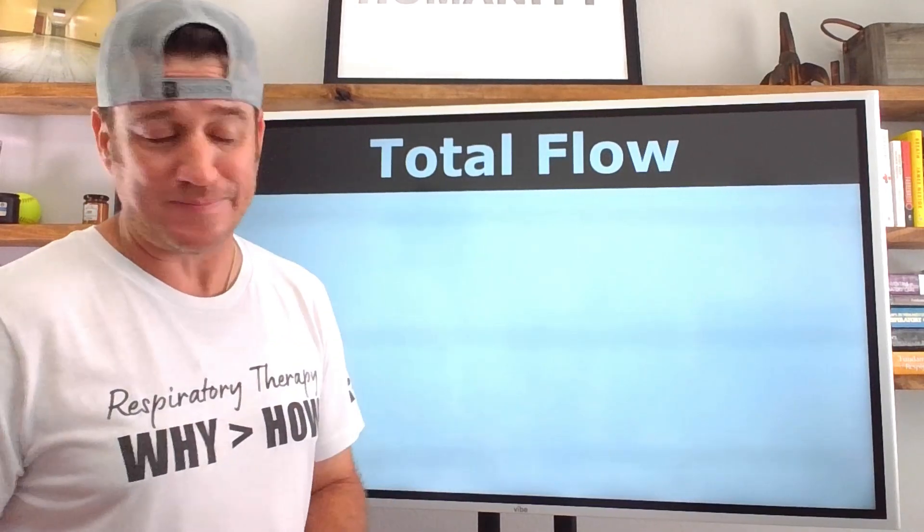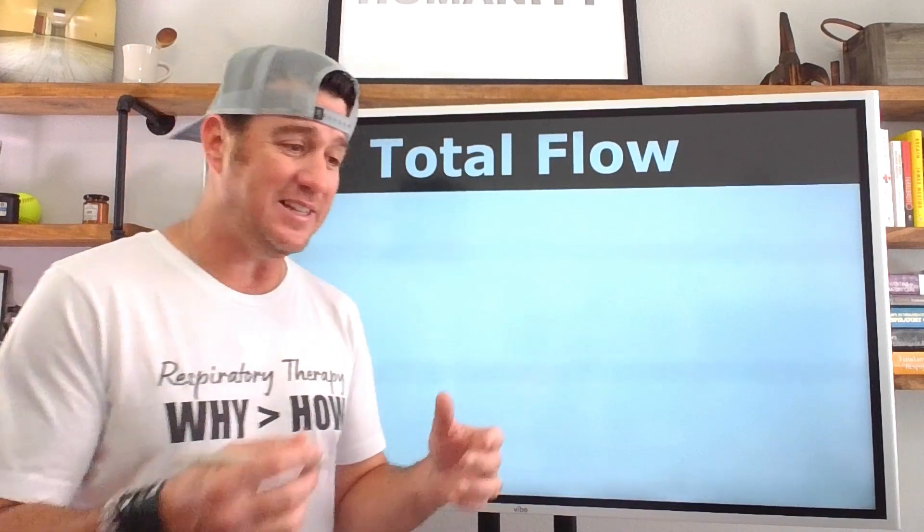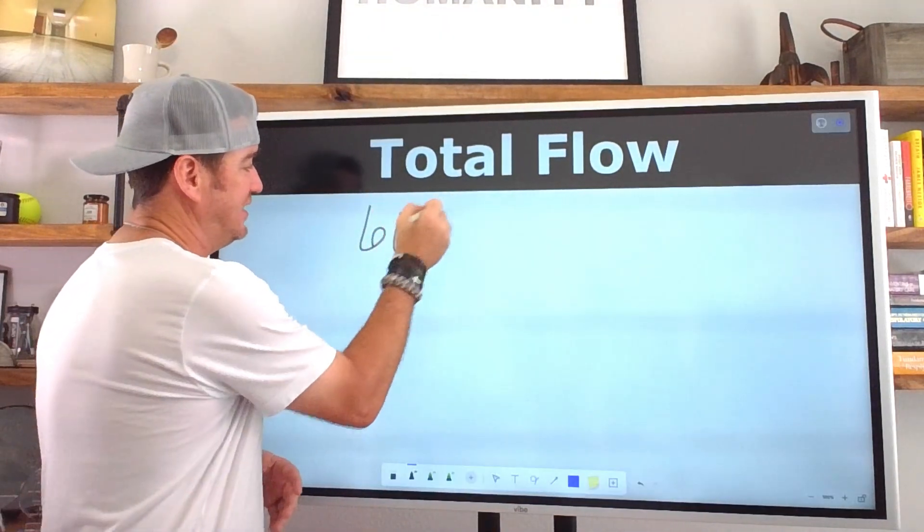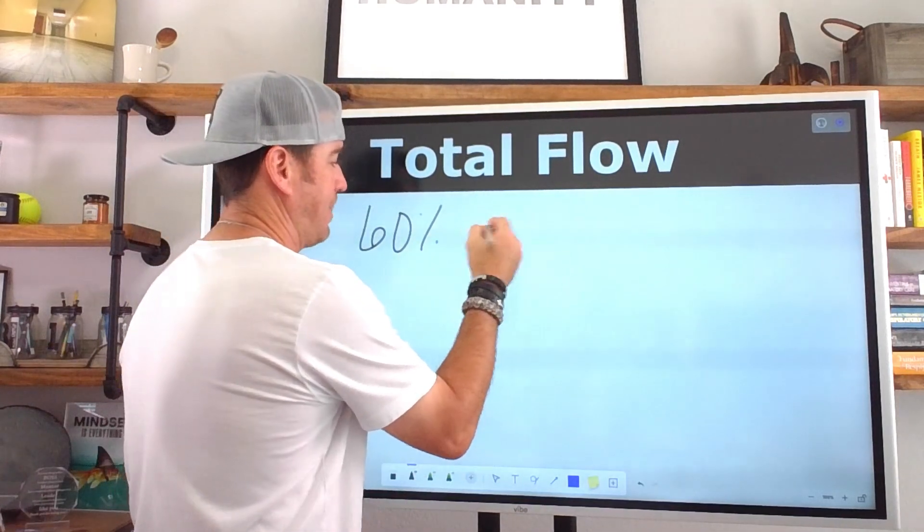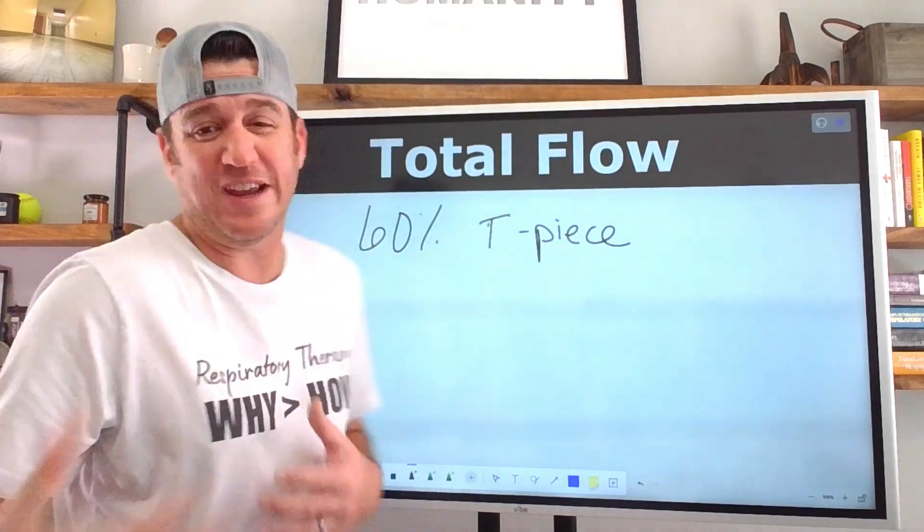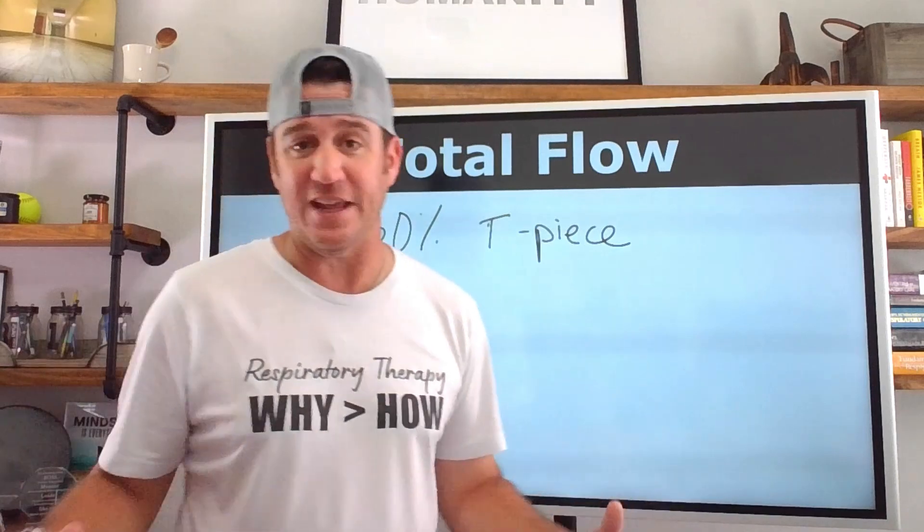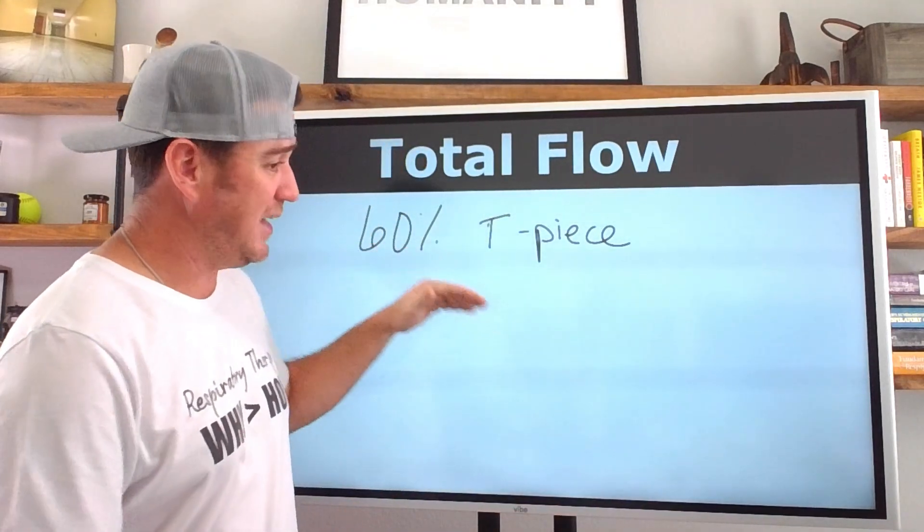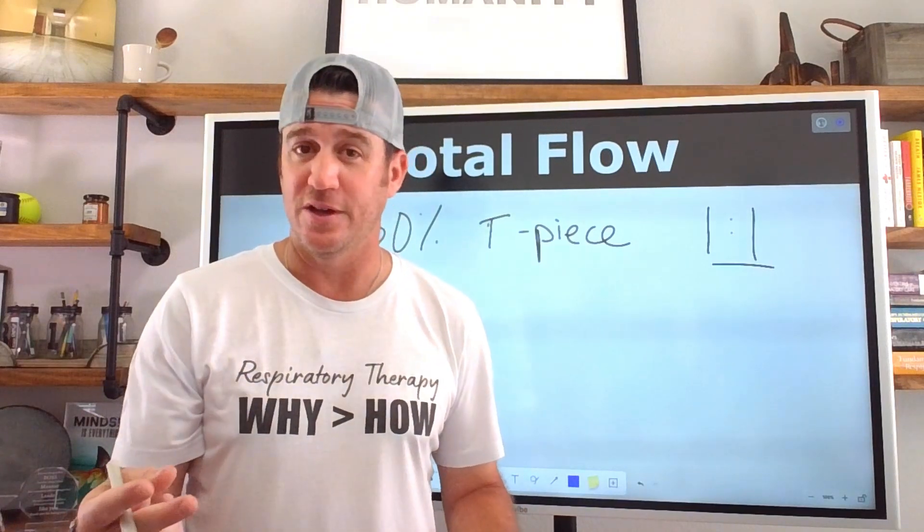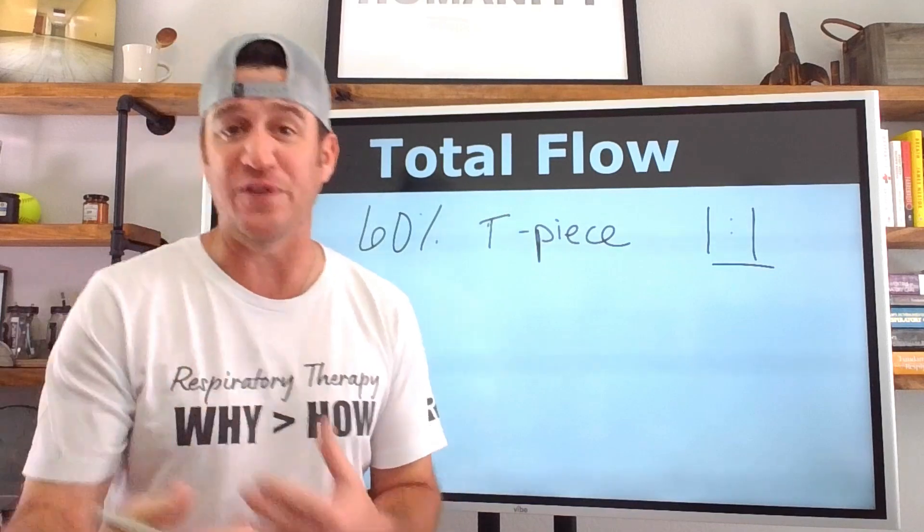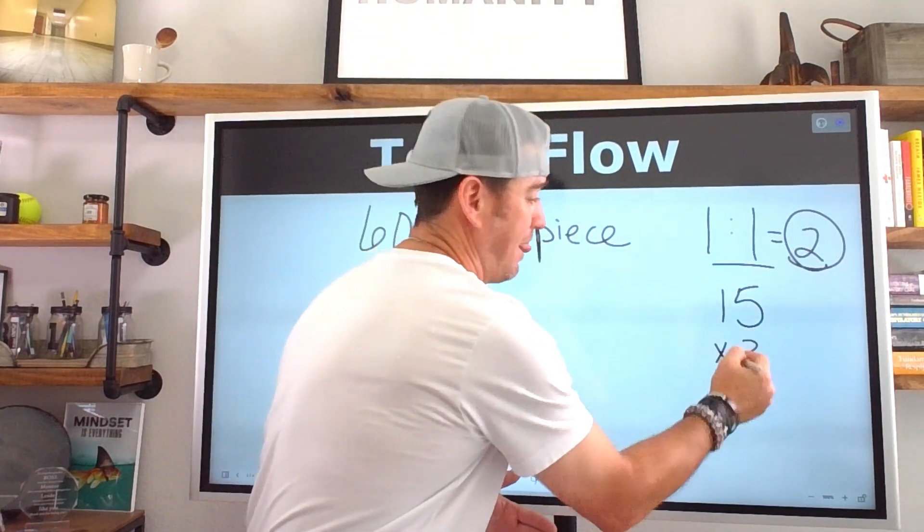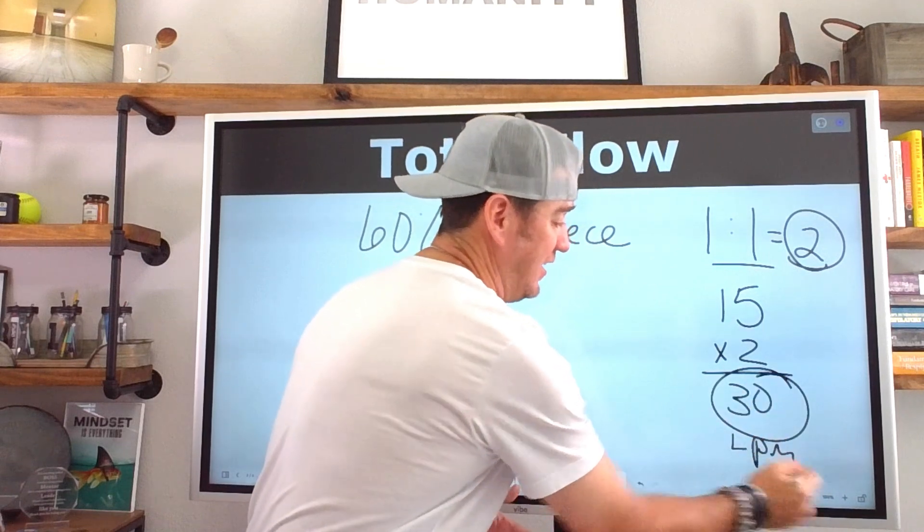Back to the question. Here's what the question is asking. It basically says if we have an air entrainment device set up on 60%. So if we're set up on 60%, and let's just say we have a 60% tee piece, 60% trach collar, 60% face tent, aerosol mask, whatever it is. The question is, since 60% has an air to oxygen ratio of one to one, that's only two total parts. And since the max you can go on a standard flow meter is 15 liters per minute, then we know that if we have two total parts, if we put it on 15 liters per minute, then the max total flow we can deliver is 30 liters per minute.